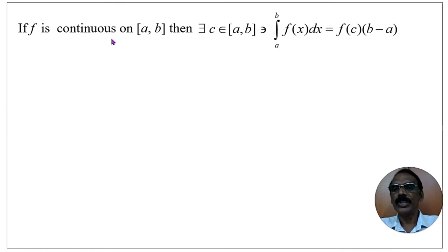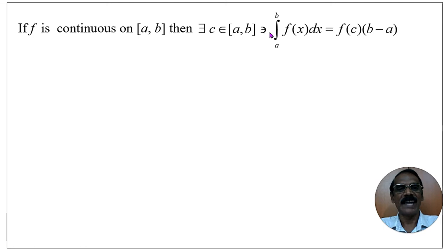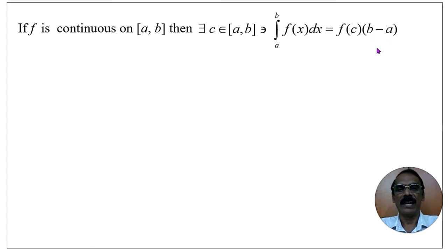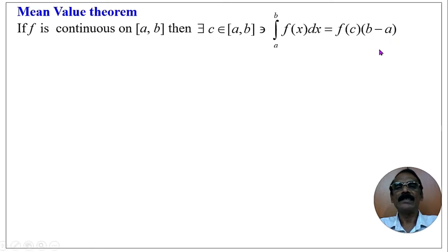If f is continuous on the closed interval [a, b], then there exists c belonging to the closed interval [a, b] such that the integral from a to b of f(x) dx equals f(c) into (b minus a). This statement is known as the Mean Value Theorem.